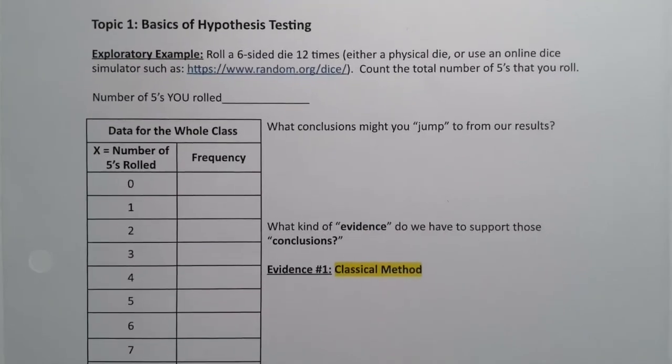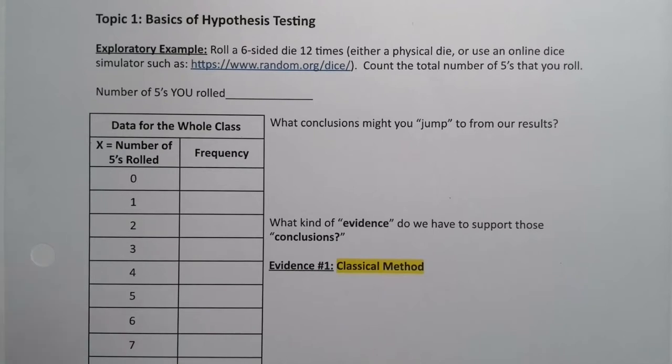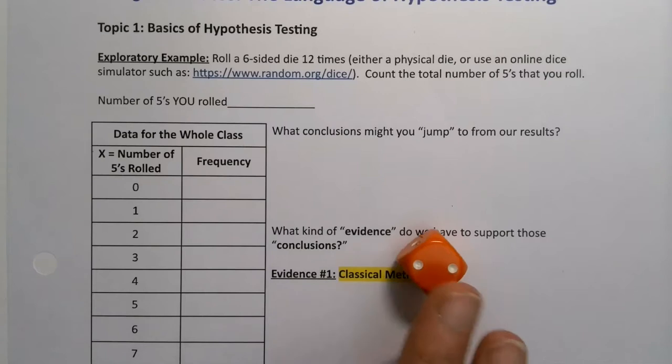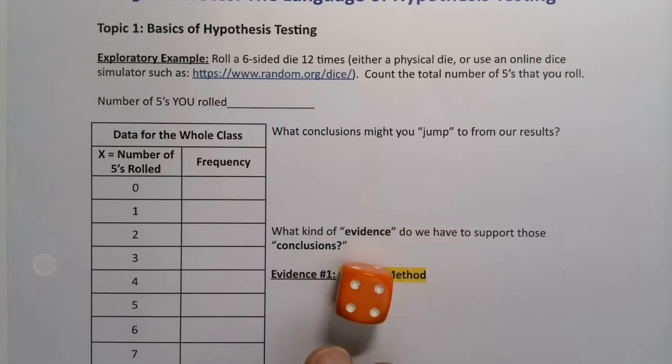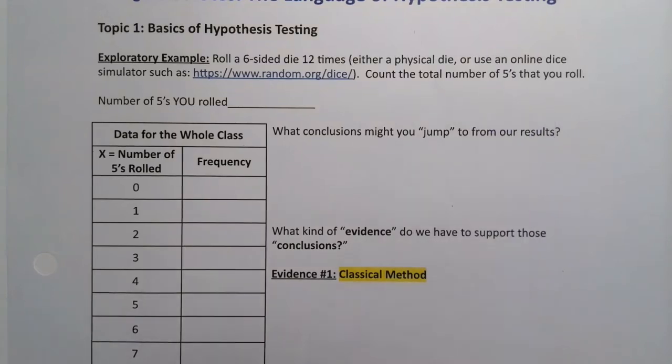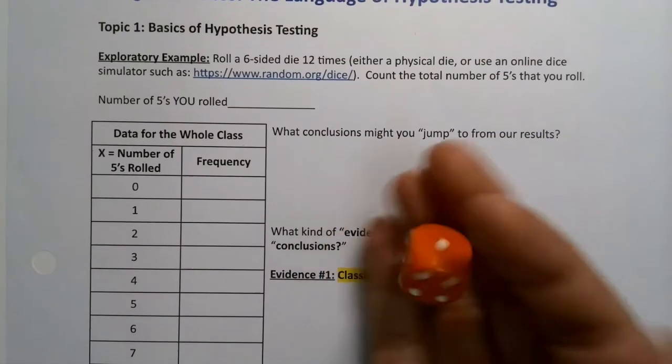Let's begin with an exploratory example. This example will be a good reference for us throughout the rest of the course. So let's suppose we're going to roll a six-sided die like this, and we're going to roll it 12 times. You can use a physical die or an online die simulator, and there's a link to one if you're interested. Now you're going to count the number of fives that you roll.